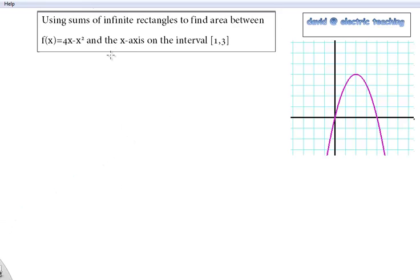Hi, David from Electric Teaching here, and we're going to use the Riemann sums to get the area underneath a curve, or between a curve and the x-axis. The function we're looking at, 4x minus x squared, is graphed right here on the interval from 1 to 3.